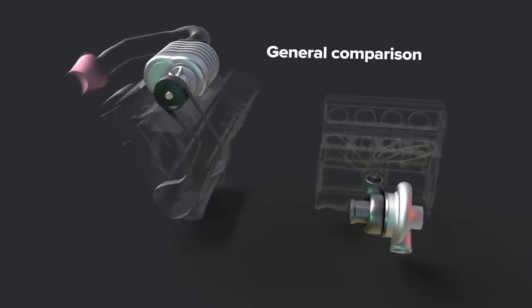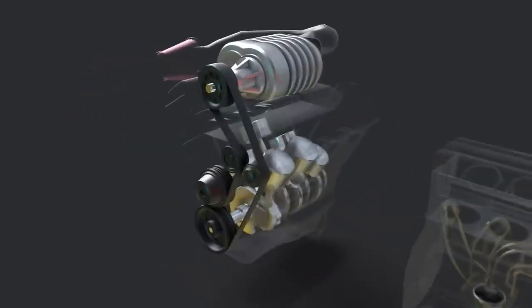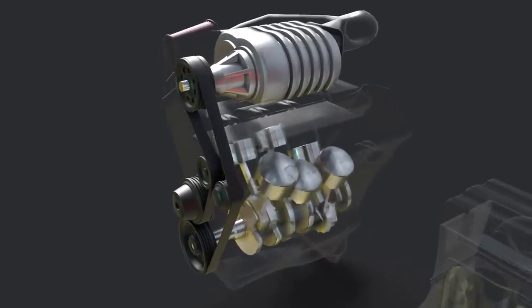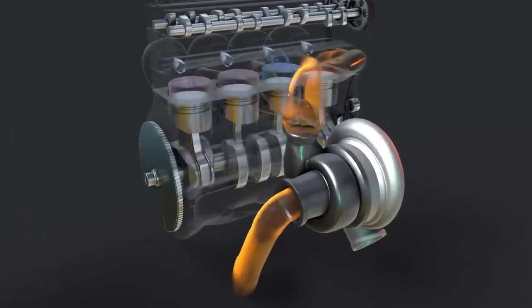Now let's compare superchargers and turbos in very general terms. Again superchargers are powered by mechanical energy for example by connection to an engine's crankshaft while turbos are powered by otherwise wasted heat energy from engine exhaust.